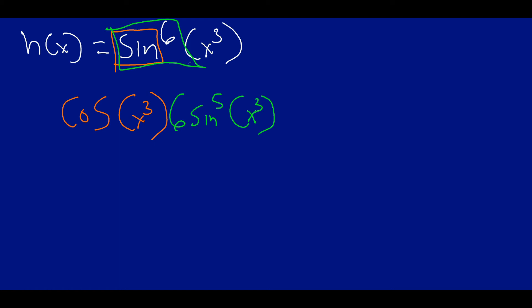I deal with this part right here, the x to the third, and that is going to be, using power rule, 3x squared. I can do some basic simplification here, so I can combine the six with this three right here. My final answer will be 18x squared times sine to the fifth of x to the third times cosine, and inside that we're going to have x to the third.